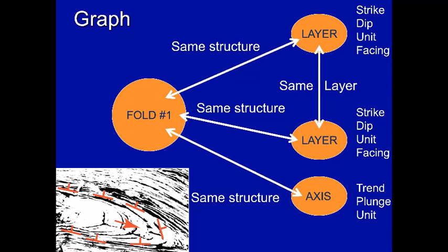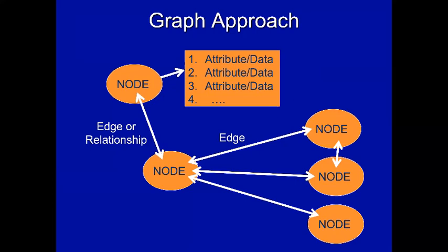As introduced earlier in the week, Strabo is working on a graph database approach. Rather than the rigid relational structure, a graph database uses entities (nodes) — like a layer, fold axis, or fault — that all relate together. Nodes have attributes and are connected by edges or relationships. Graph theory is very well developed mathematically, and this harnesses a different field of data science to look at how data are put together and related.